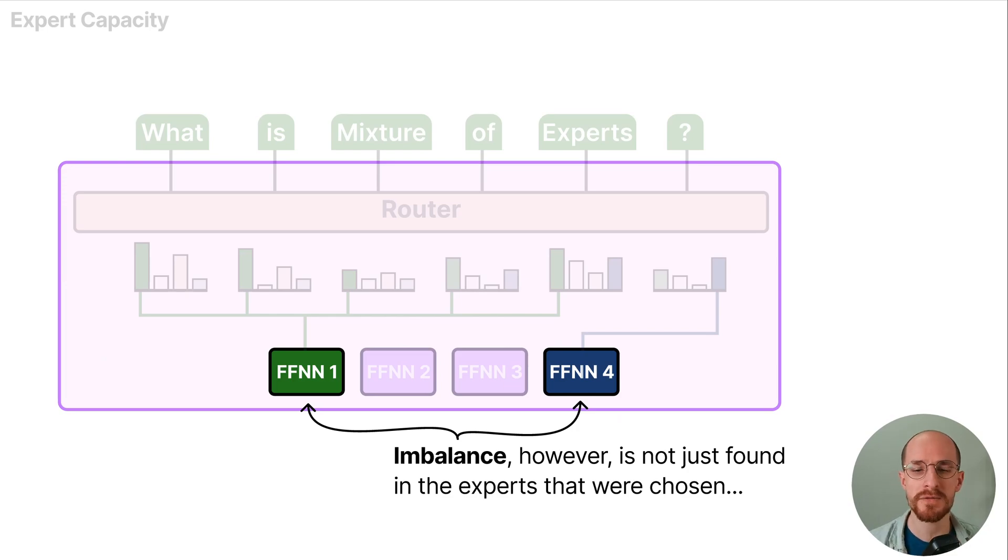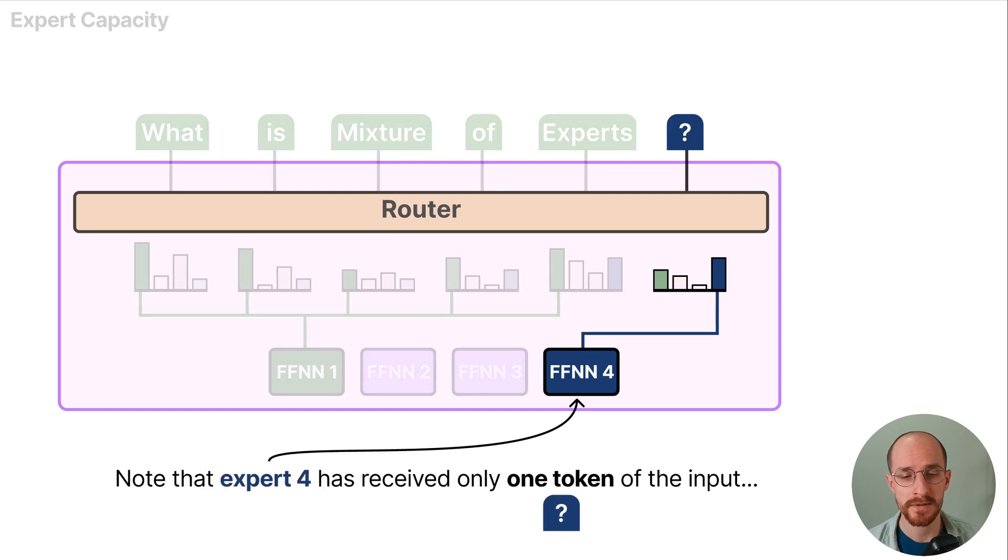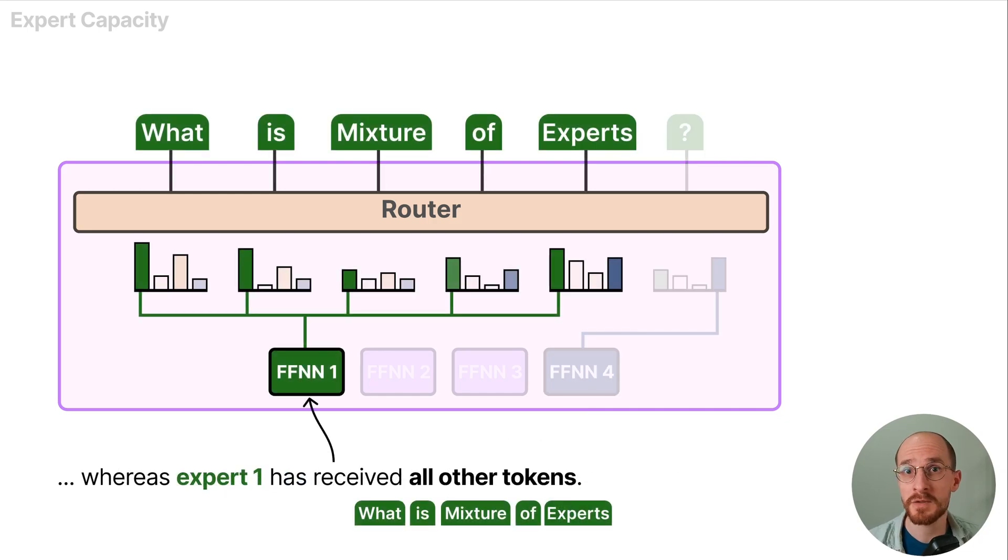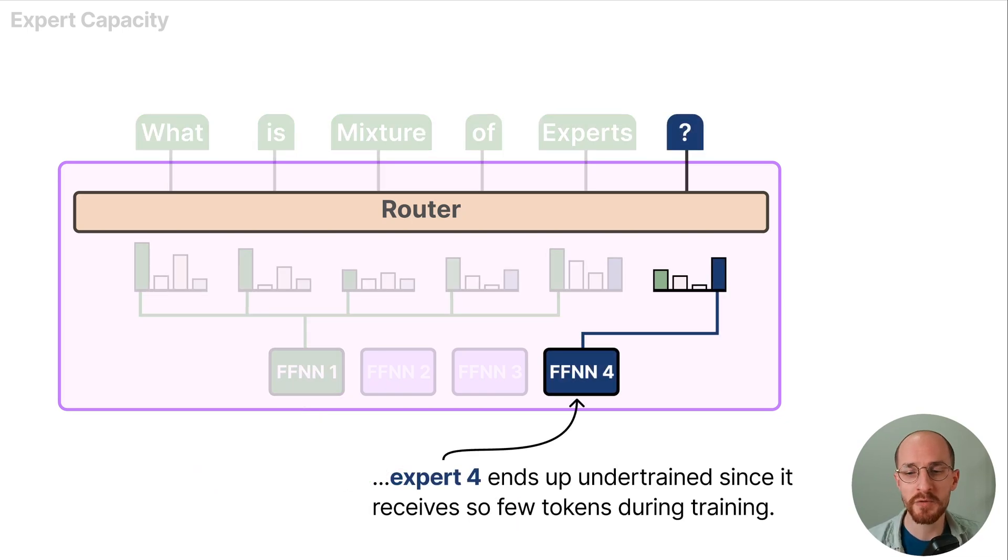Imbalance however is not just found in the experts that were chosen, but also in the distributions of tokens that are sent to the experts. Note that expert 4 has received only one token of the input whereas expert 1 has received all other tokens. As a result compared to expert 1, expert 4 ends up undertrained since it received so few tokens during training.